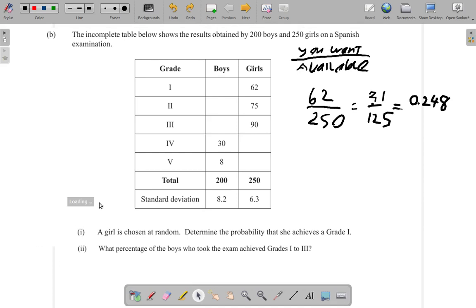Now we know that there are 200 boys. How many got grades 4 and 5? These were 30 plus 8, which is 38. So the number that got grades 1 to 3 would be 200 minus 38.